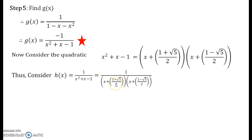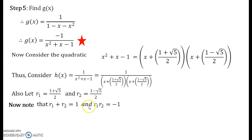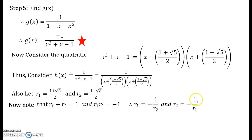We let the irrational root (1 plus root 5)/2 be called r1, and (1 minus root 5)/2 be called r2. We note that r1 plus r2 equals 1 and r1 times r2 equals minus 1. Moreover, r1 is nothing but minus 1 times r2, and r2 is nothing but minus 1 times r1. Also, g(x) and h(x) are related by g(x) equals minus h(x).